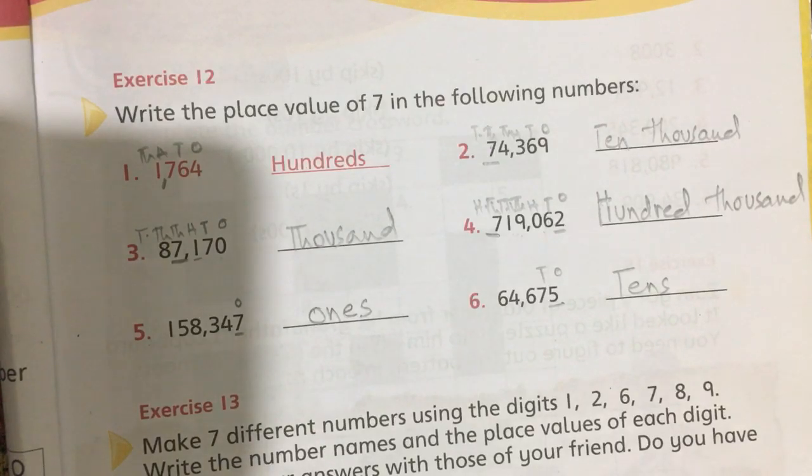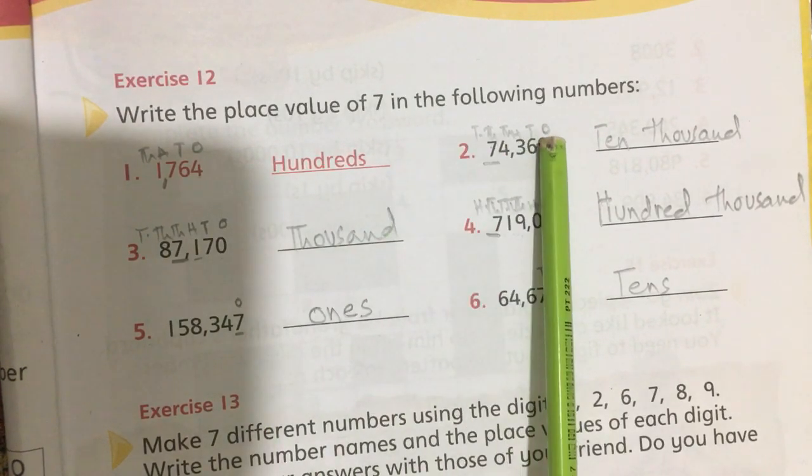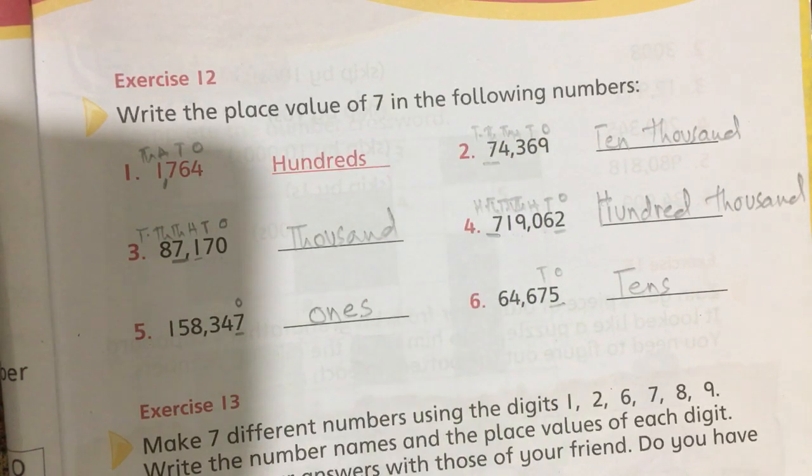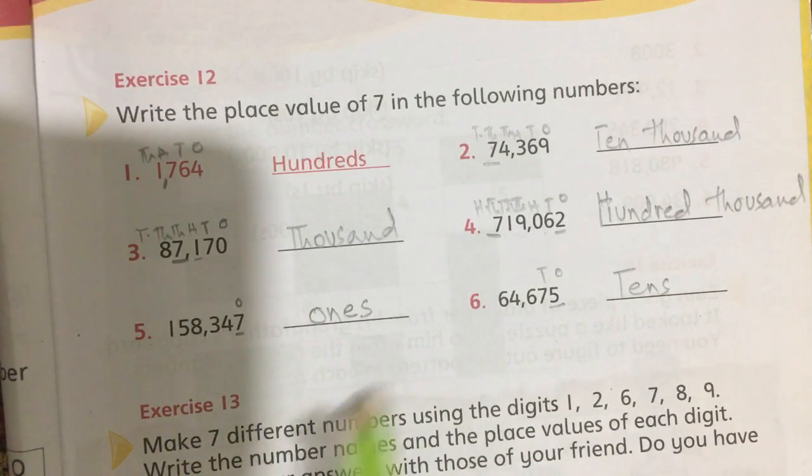You should keep in your mind the place values of numbers. Place values start from 1, 10, 100, 1000, 10,000, and then 100,000. This is exercise number 12. Solve this exercise in your book.